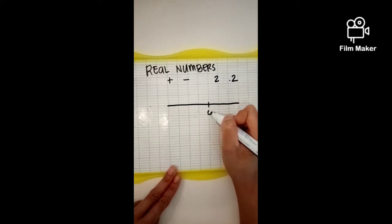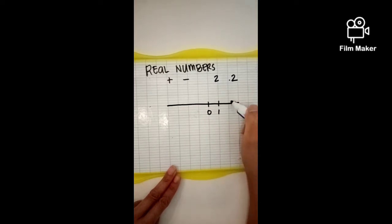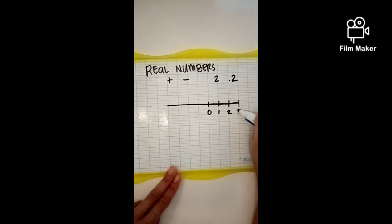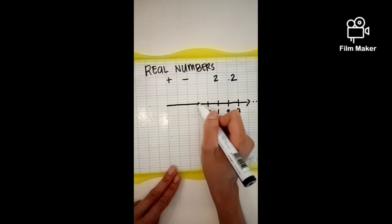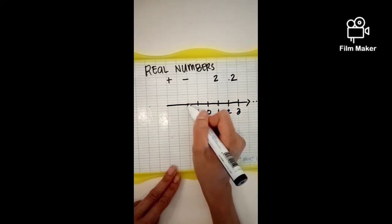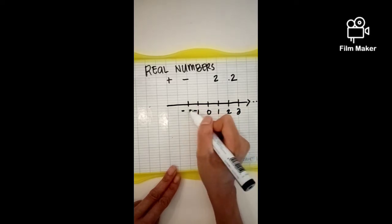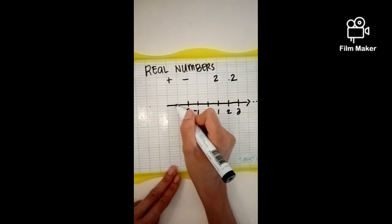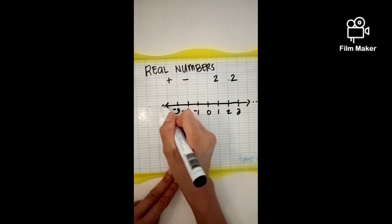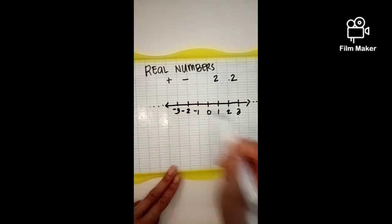Zero, one, two, three, and so on. On the other side: negative one, negative two, negative three, and so on.